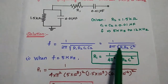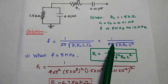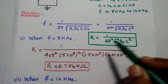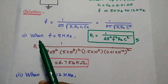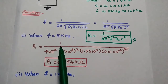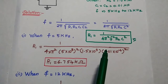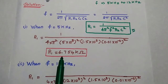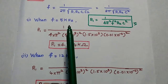To find R1, we take square on both sides: f squared equals 1 by 4 pi squared R1 R2 C squared. Rearranging, R1 equals 1 by 4 pi squared f squared R2 C squared. When f equals 5 kilohertz, substituting f equals 5 times 10 to the power 3, R2 equals 1.5 times 10 to the power 3, and C equals 0.01 times 10 to the power minus 6, we get R1 equals 6.754 kilo ohm.